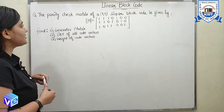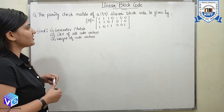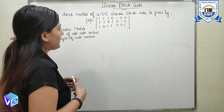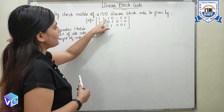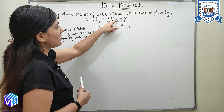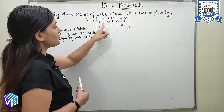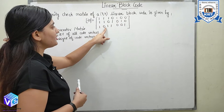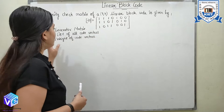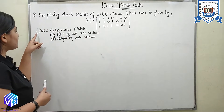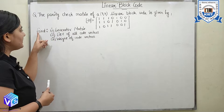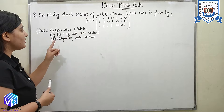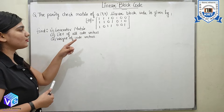The question states: the parity check matrix of a (7,4) linear block code is given by H = [1 1 1 0 1 0 0; 1 1 0 1 0 1 0; 1 0 1 1 0 0 1]. Find the generator matrix, list of all code vectors, and the weight of code vectors.